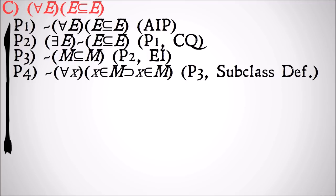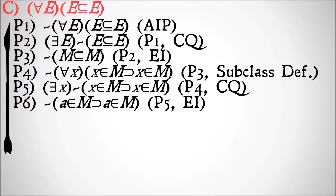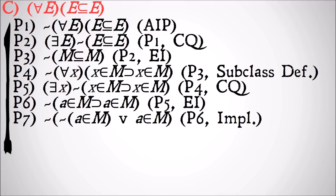It's not the case that M is a subclass of itself. Then by subclass definition we can have it's not the case that for all X, X is a member of M implies X is a member of M. Change of quantifier to change the universal quantifier to existential, then we'll existentially instantiate X to A. Hopefully you see where we're going here.